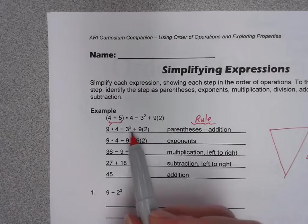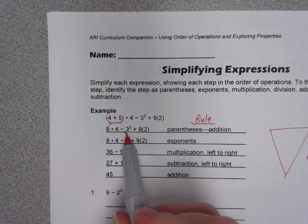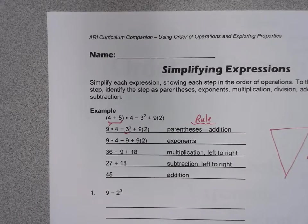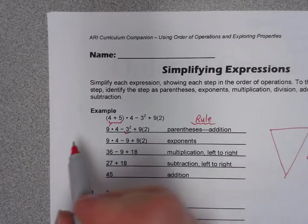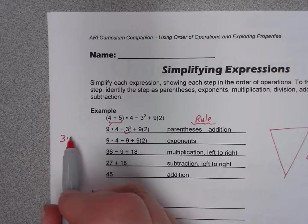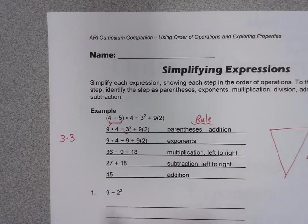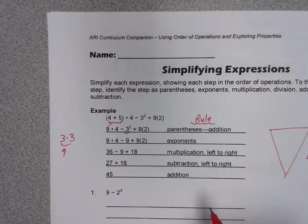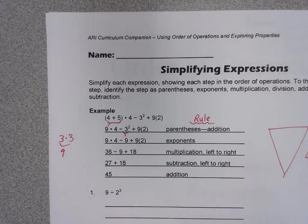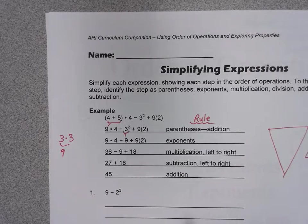exponents. There are some exponents here — it says 3 to the second power. I like to show that in expanded form off to the side so that I don't ruin my line-by-line work. I show 3 to the second power means 3 times 3, which will get you 9. That's where this 9 came from, and everything else stays the same.